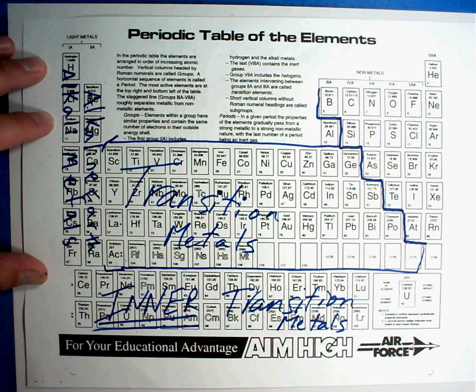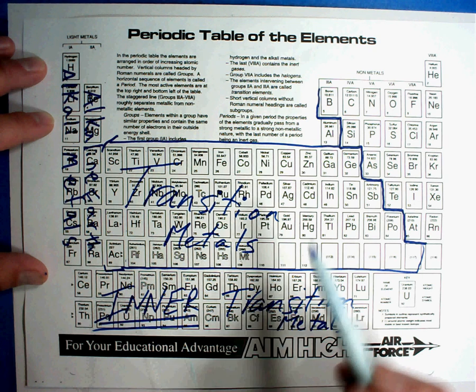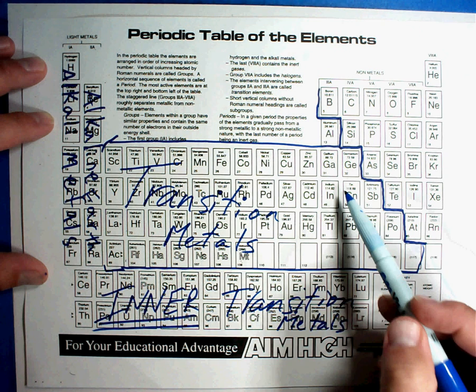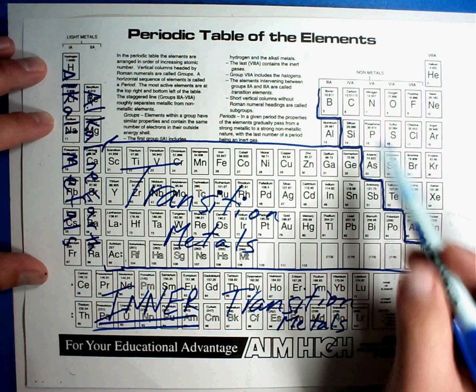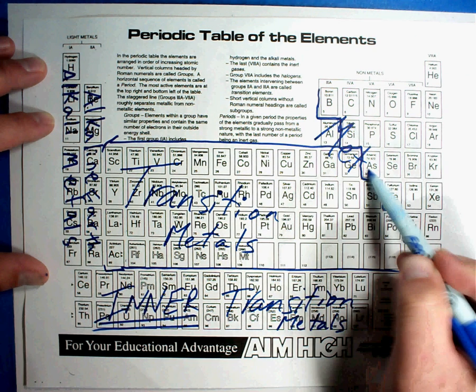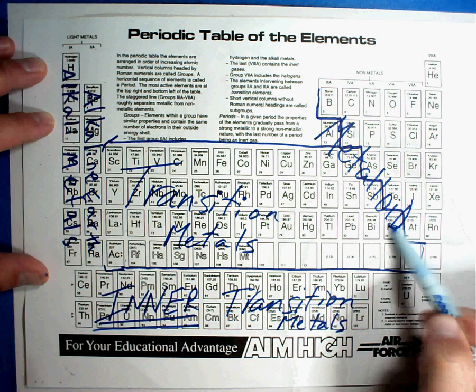Now, we're going to talk about this staircase for a second. You'll notice that it separates one group from these groups over here. Well, these are called the metalloids, M-E-T-A-L-L-O-I-D-S. What is a metalloid? Well, it is a metal and a non-metal.